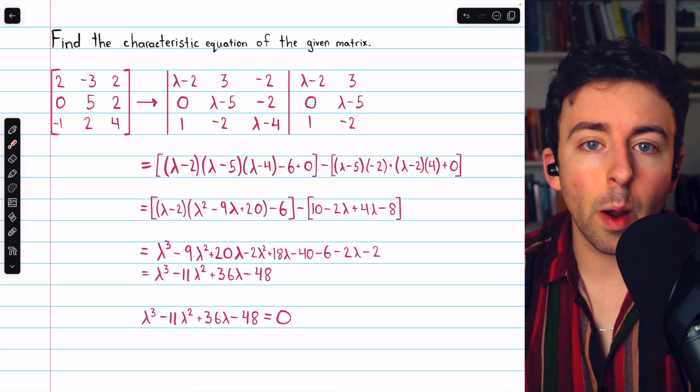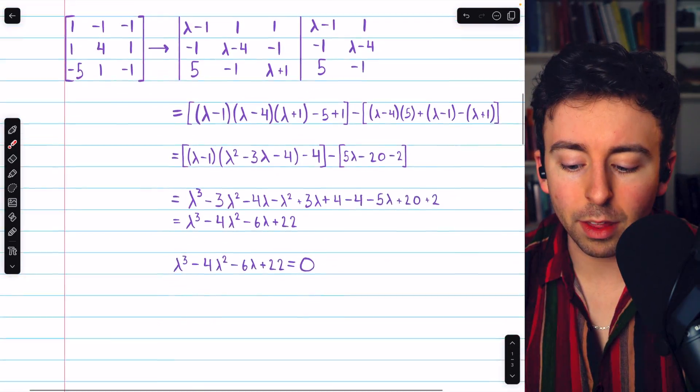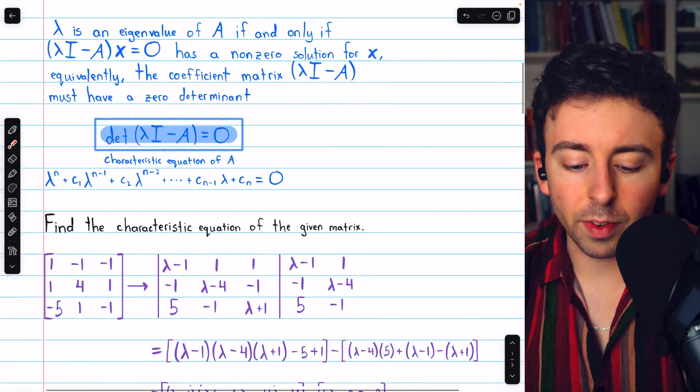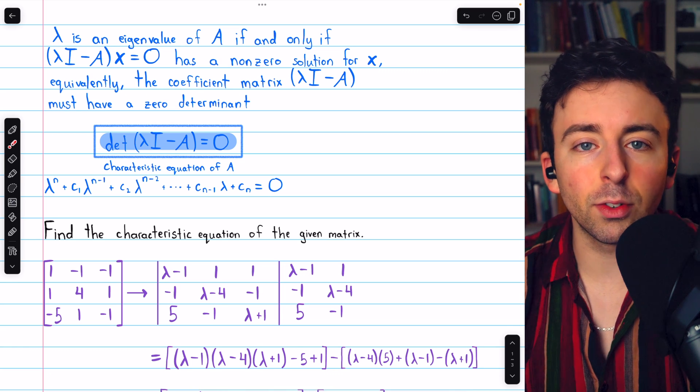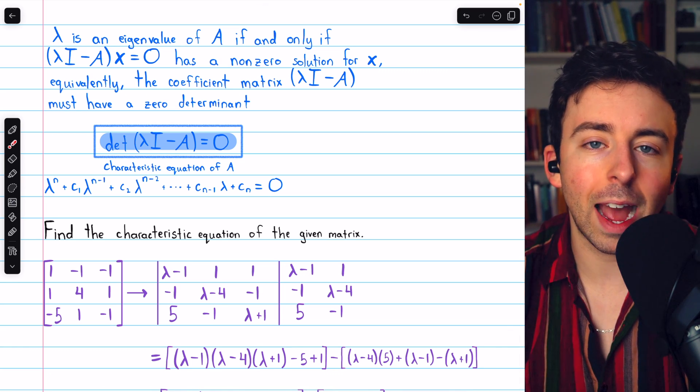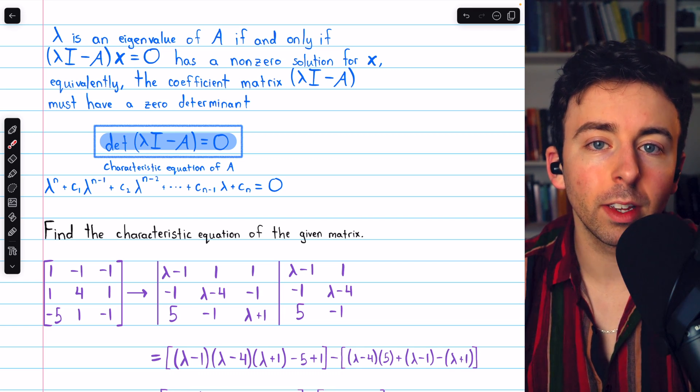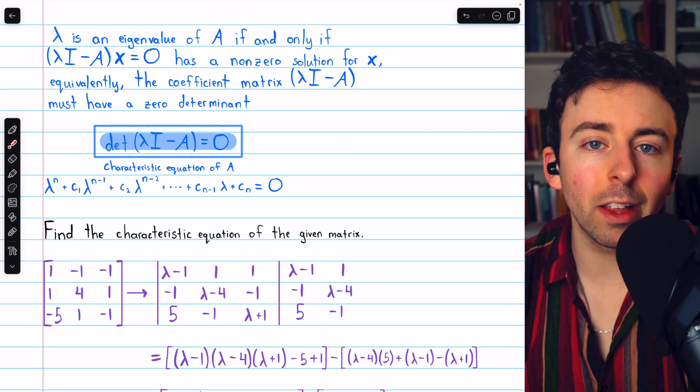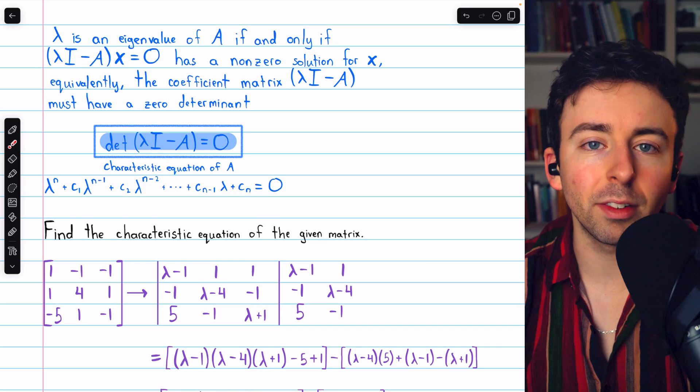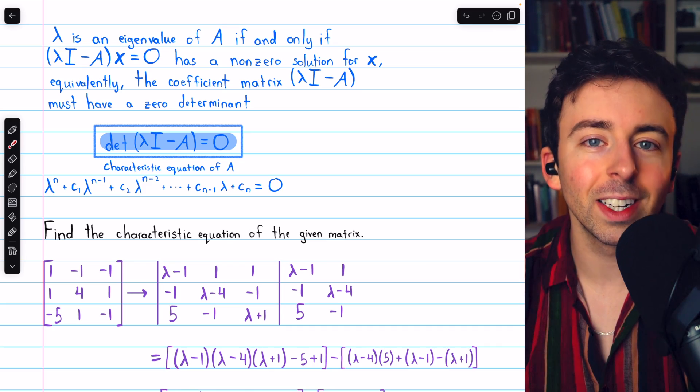And that's how to find the characteristic equation of a 3x3 matrix. Let me know in the comments if you have any questions. And I'll leave a link in the description to a lesson where we go over actually finding the eigenvalues of a 3x3 matrix. Also, be sure to check out my linear algebra course and linear algebra exercises playlists in the description for more. Thanks for watching.